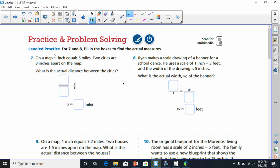Number 7 says, on a map, 1 inch equals 5 miles. Two cities are 8 inches apart on the map. What is the actual distance between the cities?